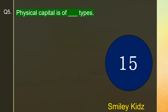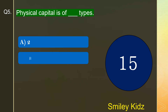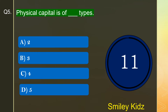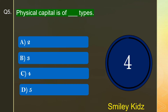Question number 5. Physical capital is of dash types. The options are A. 2, B. 3, C. 4, or D. 5. Your time starts now. Your time is up and the right answer is option A. 2. Physical capital is of two types.